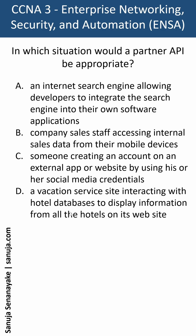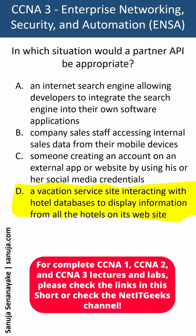Out of all the answers from A to D, the correct answer is D — a vacation service site interacting with hotel databases to display information from all the hotels on its website. In other words, there is a single point where the customer interacts with the vacation website, and it is pulling information from other partner organizations and businesses, then displaying aggregated or consolidated information on all the services available across all those different partners.